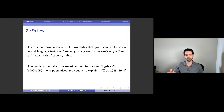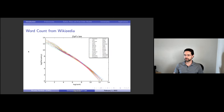This comes from George Zipf, a linguist, which is how Zipf's law got its name. One way of visualizing Zipf's law is to do a log-log plot of the frequency of words versus rank. If you get a straight line with a slope of minus one in this type of plot, that tells you that you have Zipf's law.